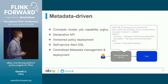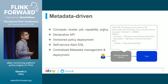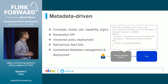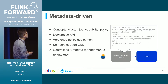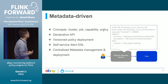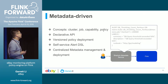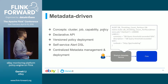We also implemented a self-service alert DSL. With this DSL, users can define alert rules by themselves. Here is one example — a simple DB throttling count alert. For example, if the Sherlock job has more than 200,000 DB queries, then we will generate the DB throttling count alert.